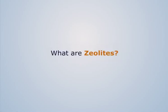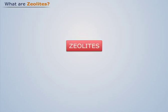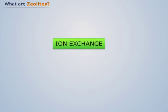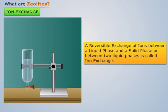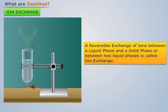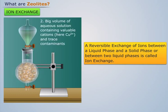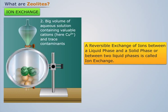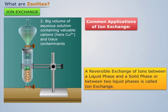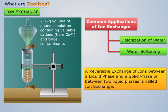What are zeolites? Before discussing what zeolites are, let's briefly understand the concept of ion exchange. A reversible exchange of ions between a liquid phase and a solid phase, or between two liquid phases is called ion exchange. It is used to remove dissolved ions from a solution by electrostatic sorption into ion exchange materials, which are also called ion exchange resins. Its common applications are deionization of water and water softening.